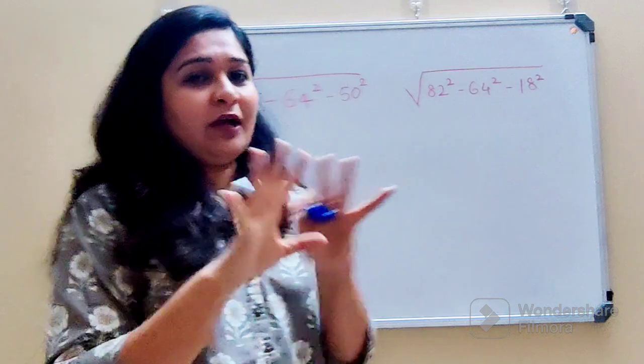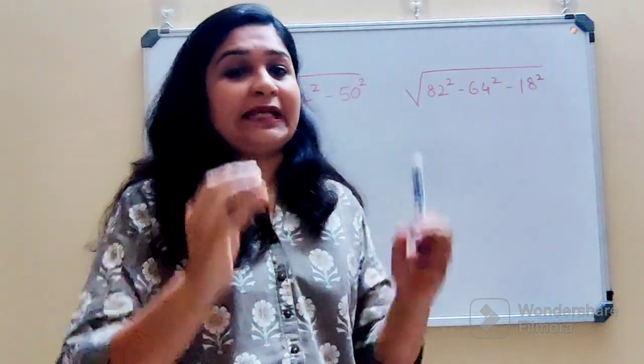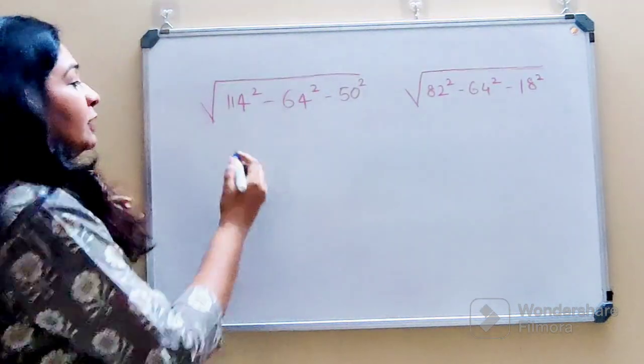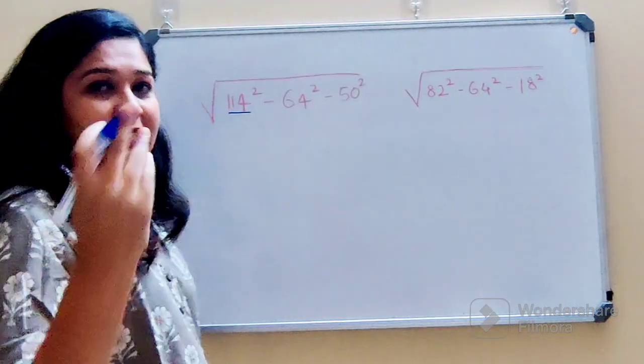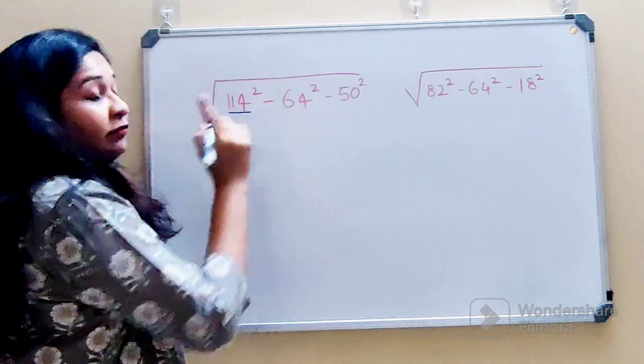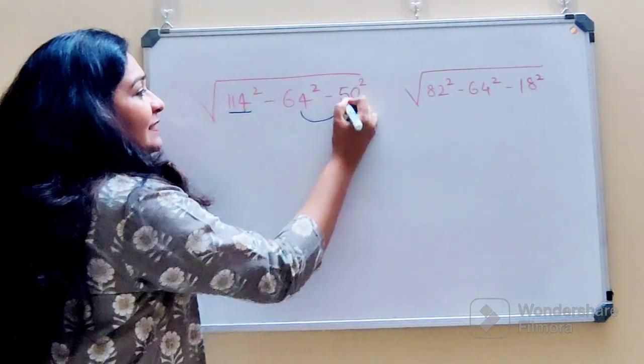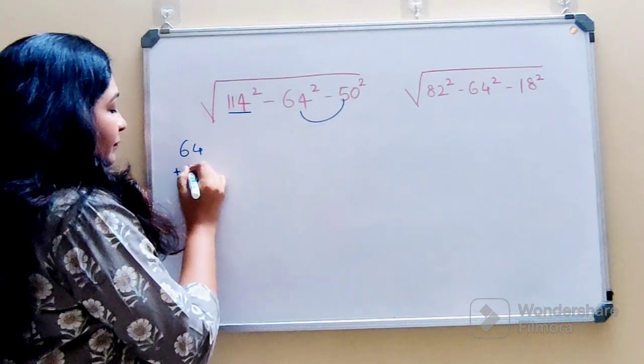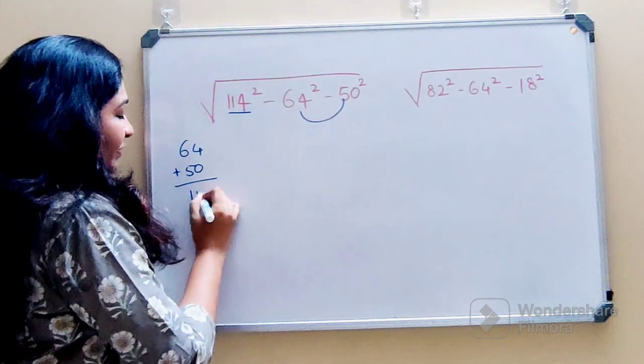Please understand, whenever you have these kinds of questions, the hint is there in the question itself. Normally you should stick to the highest number. Now if you look closely at 114, if you add 64 and 50, you get the answer as 114.